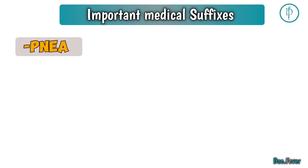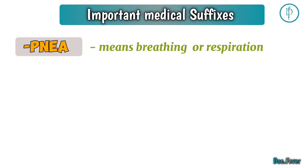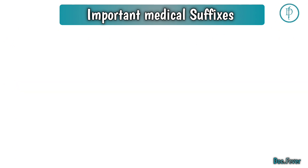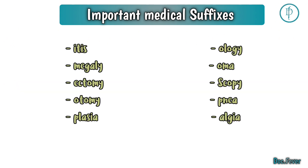And at the end, we will discuss about penia. Penia is a suffix which means breathing or respiration. For example, apenia and tachypnea. So there are a lot of suffixes in medical terminology, but these are some important medical suffixes that every medical student needs to know about.